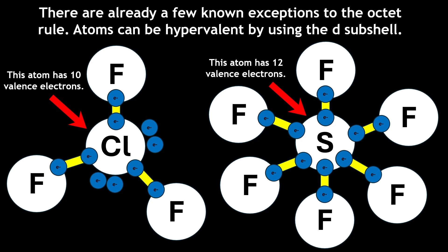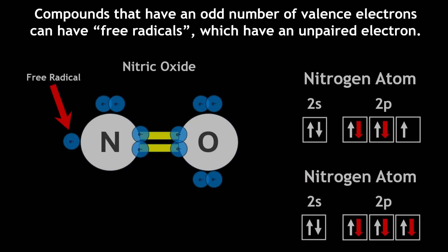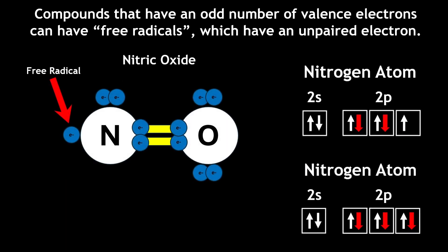But this isn't the only exception to the octet rule. Atoms can also be free radicals, which have one unpaired electron that disrupts the typical octet pattern. One example of this is nitric oxide, where the nitrogen atom has an unpaired electron, giving it seven valence electrons overall.